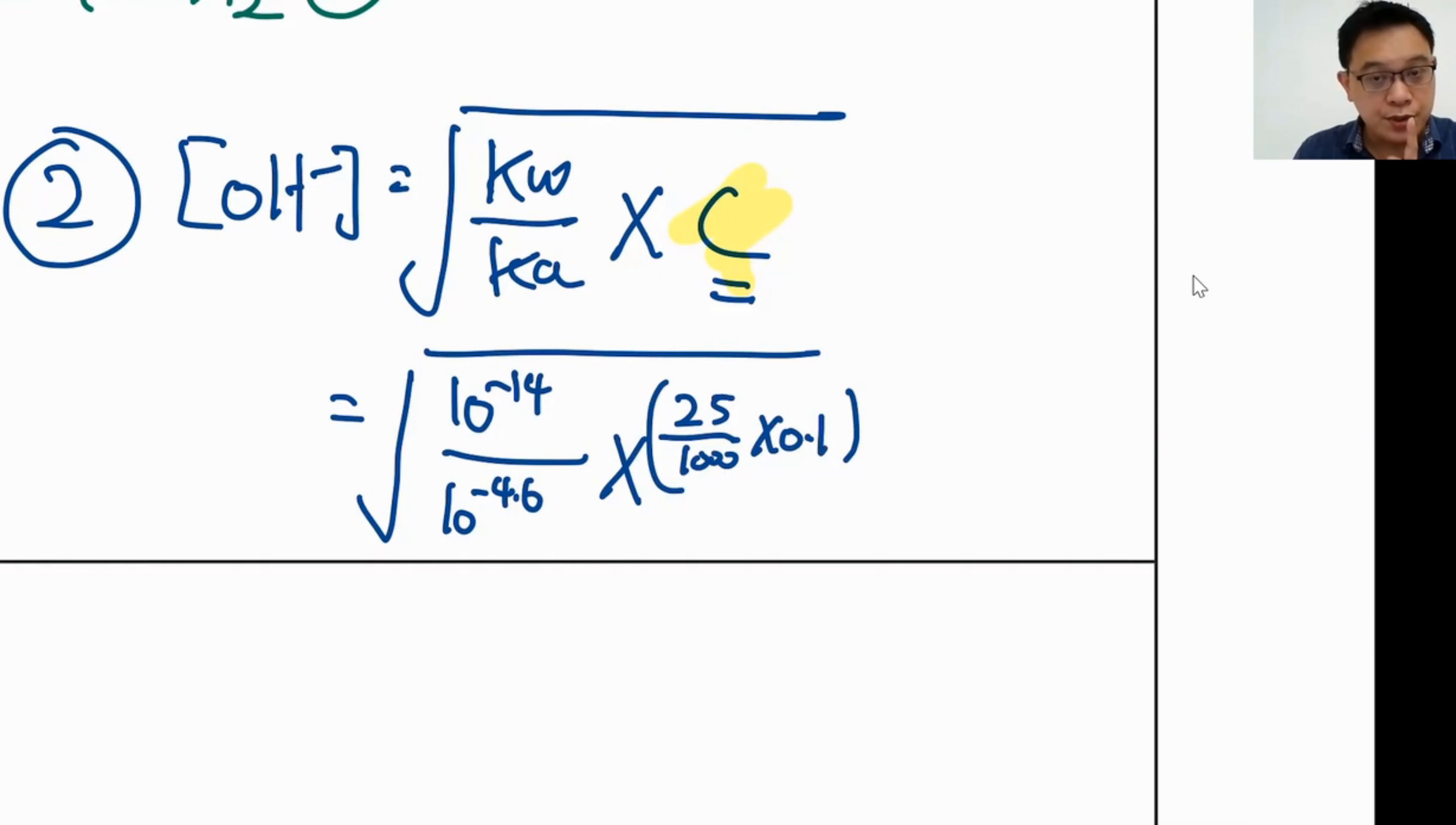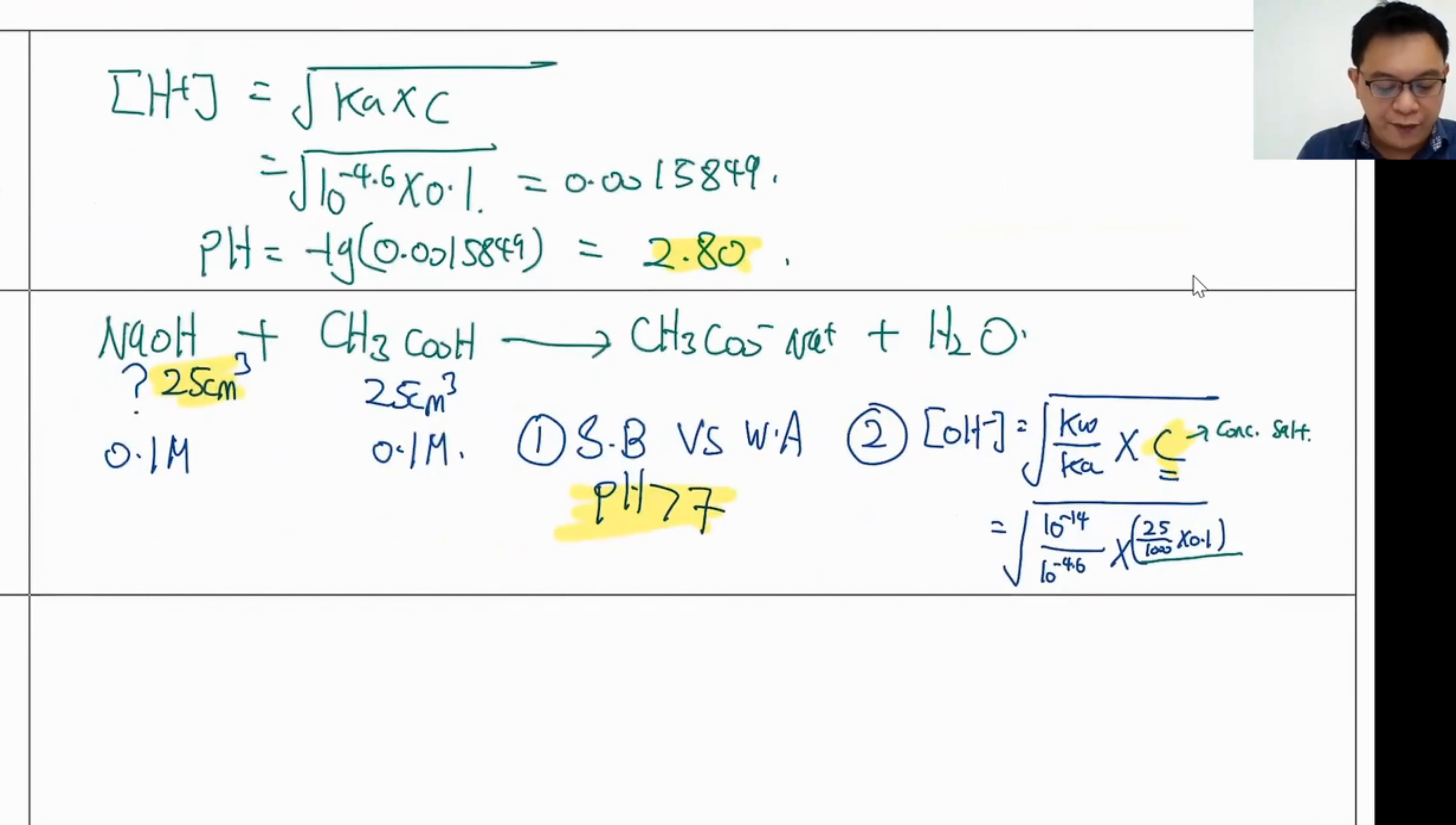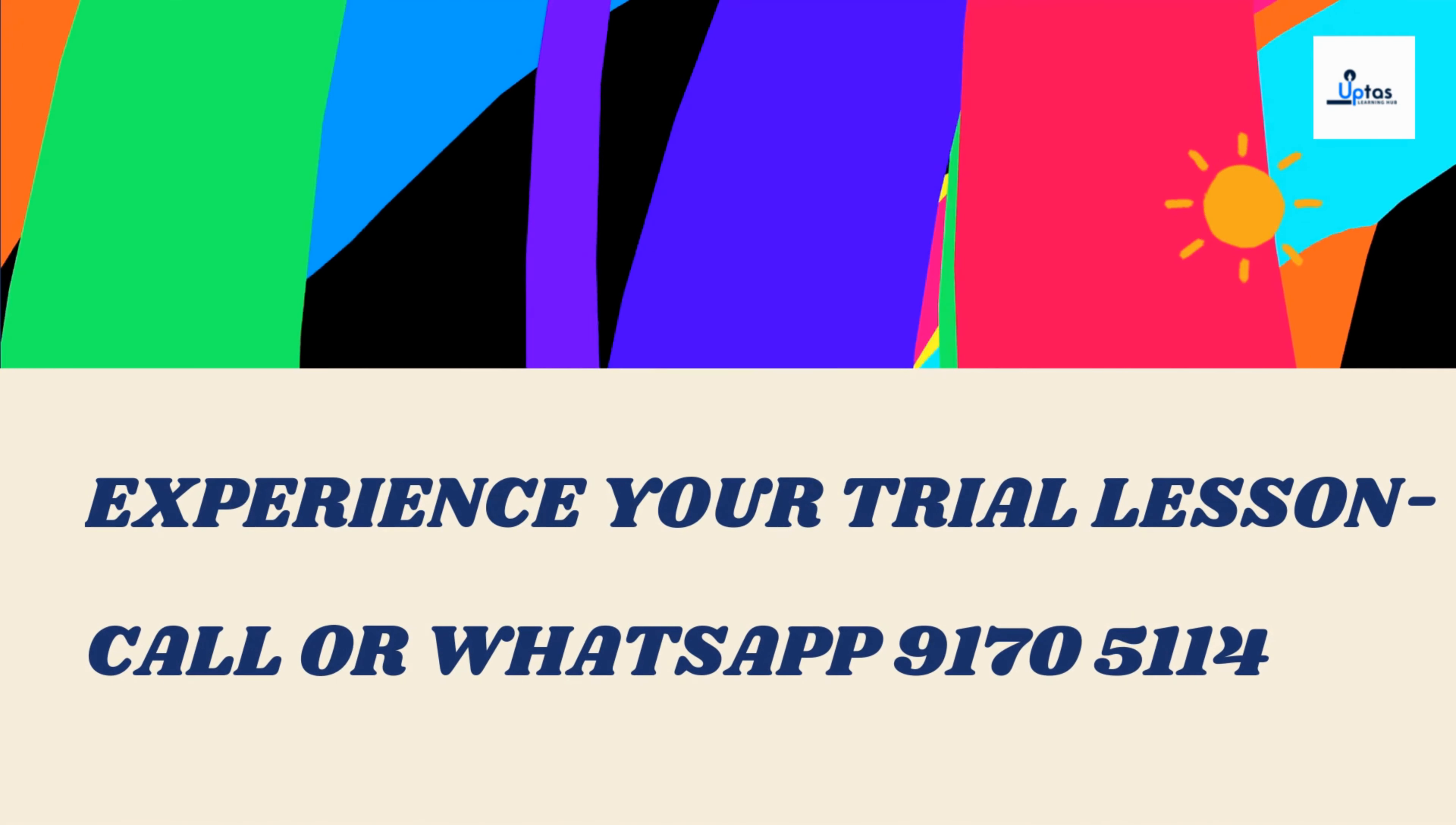Now, this is only the moles. This is not the concentration. C represents concentration of your salt. So how am I supposed to find the concentration? I need to divide by the volume. The volume is the most tricky part. Let's take a look together. You have 25 cubic cm, you have another 25 cubic cm. So that means both of them add together. The final volume is not 25, it is 50 cubic cm. You need to divide the whole thing by 50 cubic cm.